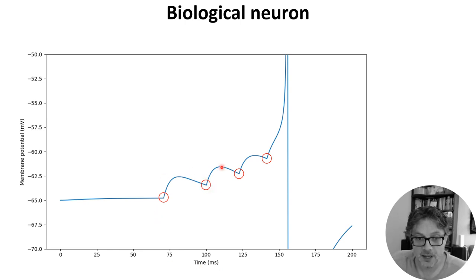And then more come in, and eventually the cumulative effect is enough to push the neuron above this threshold, and it fires a spike and resets.